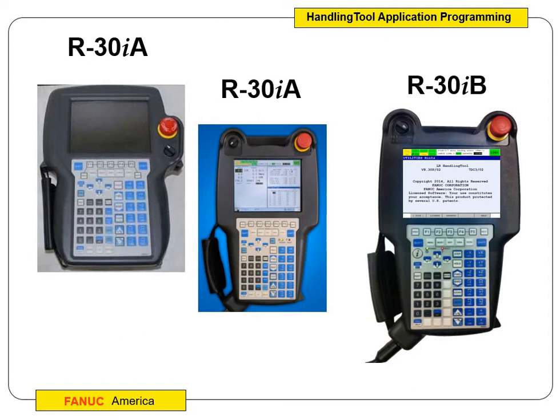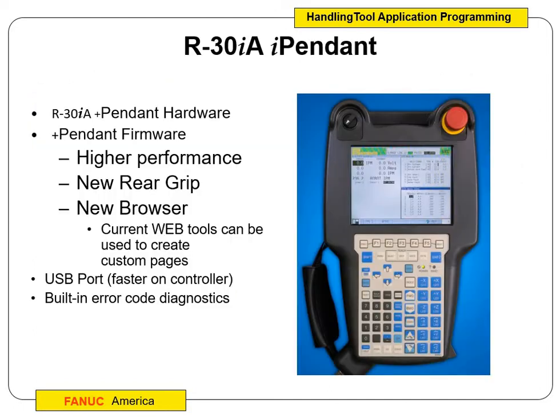This shows the different progression of where Teach Pendants have come. On the left we have the R30iA pendant — notice where the e-stop is and where turning the Teach Pendant on and off is; that's one of the main differences. It's a little bit wider and heavier. They definitely made some improvements in weight as it's come along. You can see the R30iA as it progressed to the middle picture, and then we have the R30iB. They've designed it so you're not getting a super forearm from holding it all day, because you've got to hold on to the dead man as well.